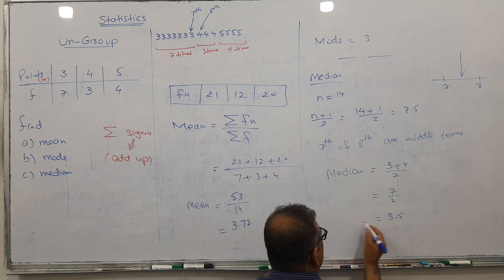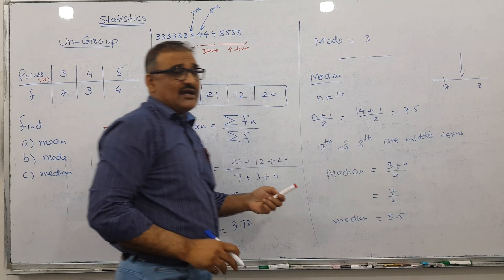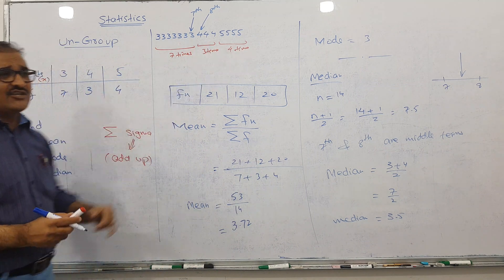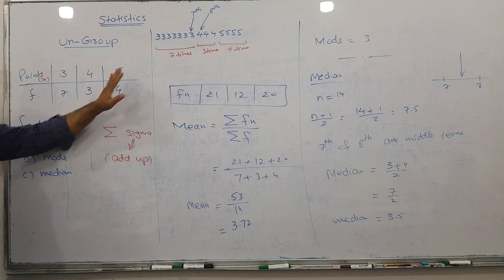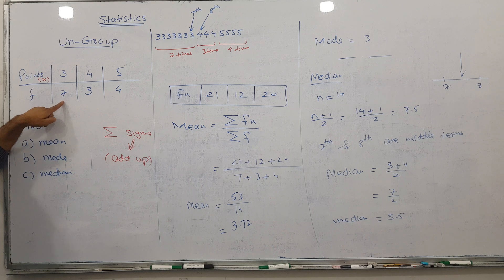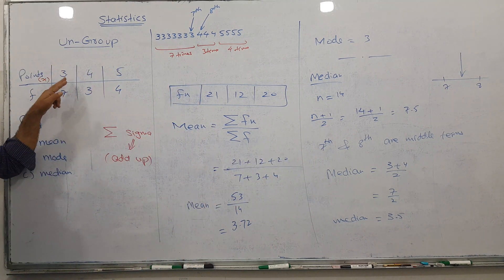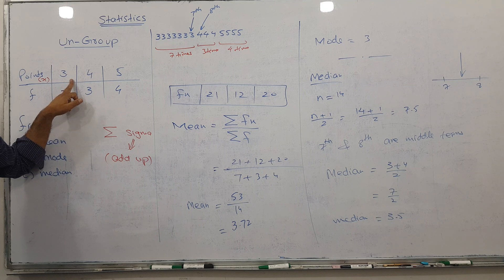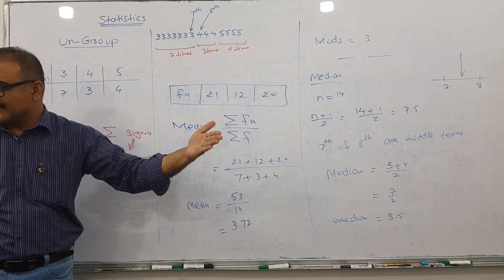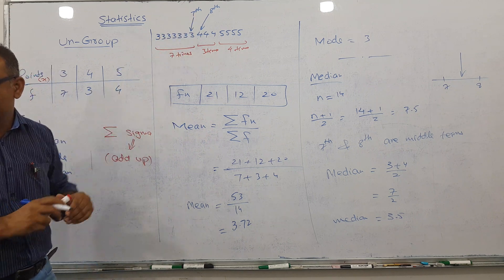There's also a short way. Since 3 comes 7 times, the last 3 is at the 7th position. Then 4 starts at the 8th position.